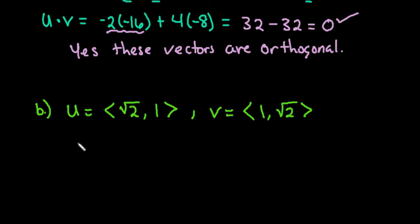If we start by finding our dot product, we would say that u·v is equal to √2 times 1 plus 1 times √2.